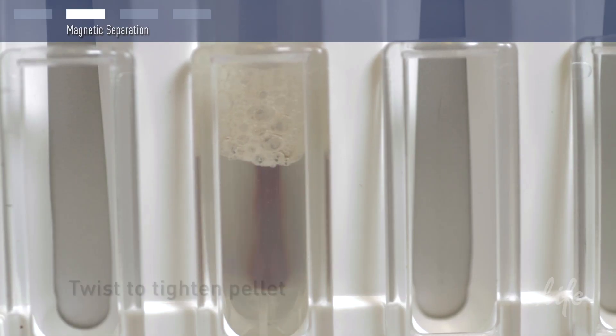If you twist the tubes, the beads will form a tighter pellet and you can move the pellet a little inside the tube. This can be helpful both for pipetting and when you want to re-suspend in a smaller volume later on.